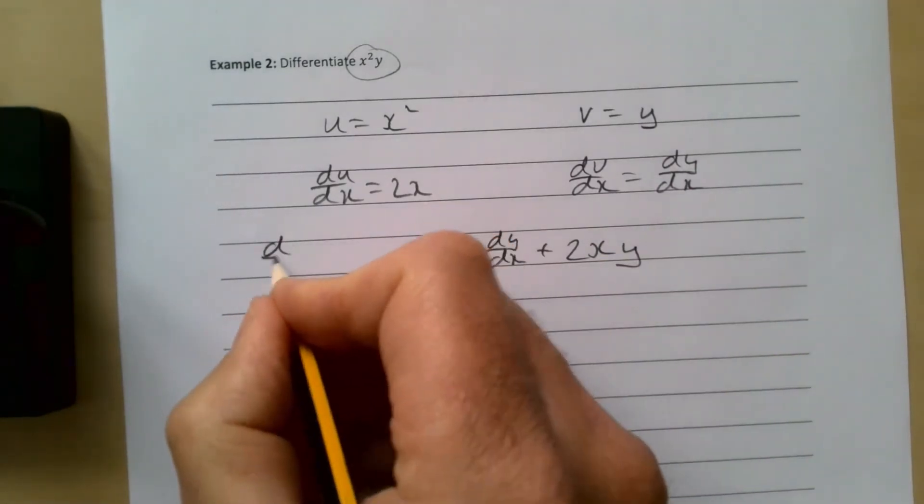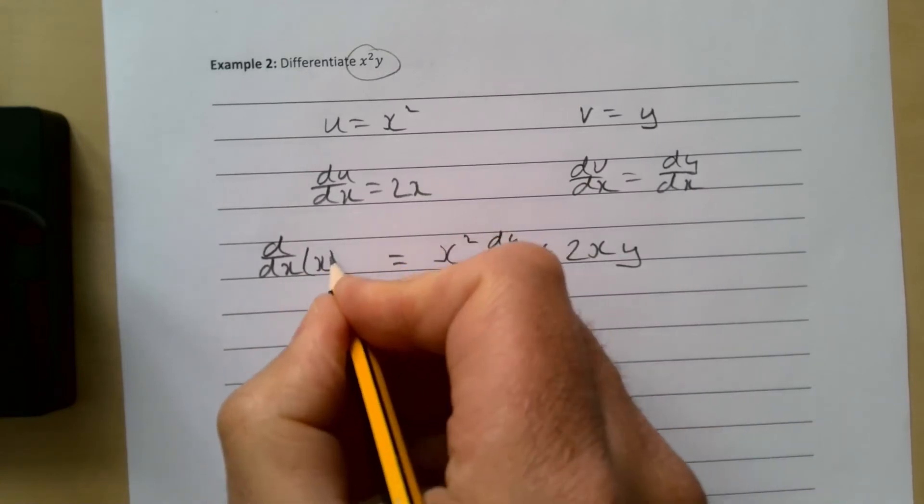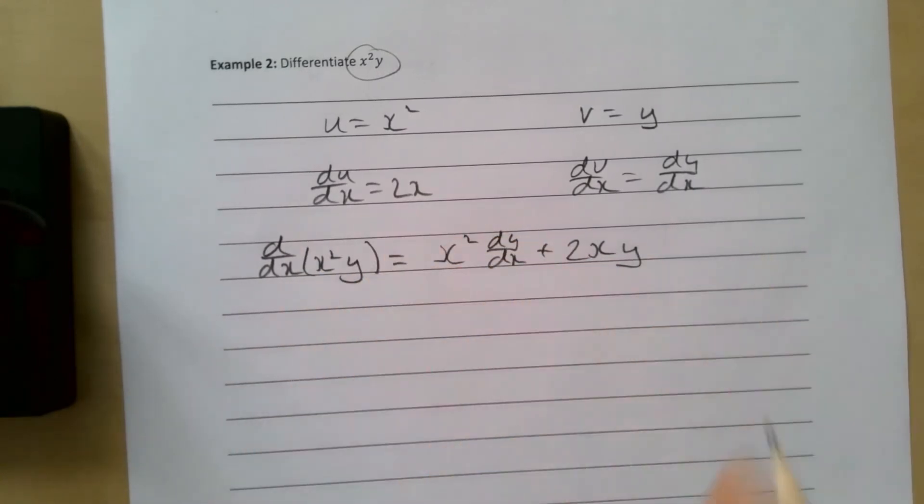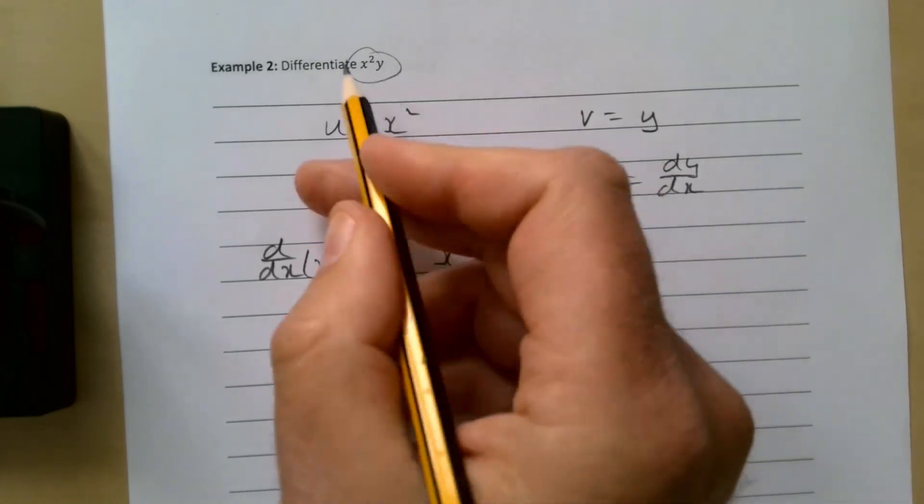So that's us differentiating x²y with respect to x. Notice it is a product, so you need to use the product rule for that.